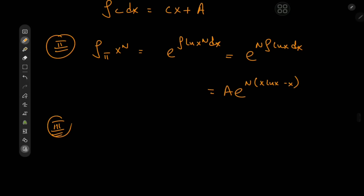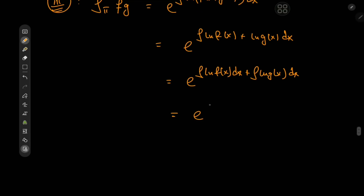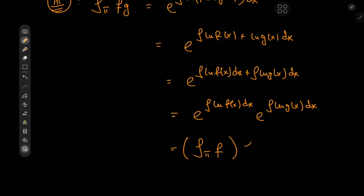What about the product integral of an actual product? The product integral of f times g equals e to the integral of log(f(x) · g(x)) dx, which equals e to the integral of (log f(x) + log g(x)) dx. Using linearity of the integral this gives e to the (∫log f dx + ∫log g dx), which equals the product integral of f times the product integral of g. So the integral of a product is the product of the integrals — a really cool product rule.